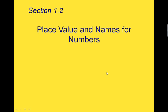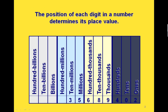This is section 1.2, Place Value and Names for Numbers. The position of each digit in a number determines its place value. So if we have a number that looks like this, then each digit in that number has a different place value.